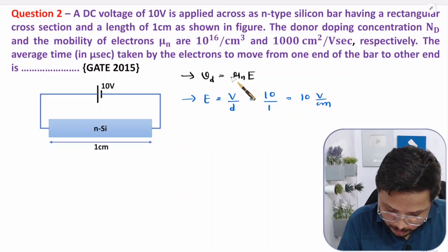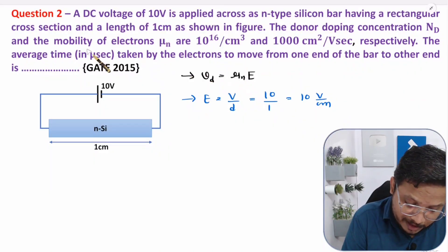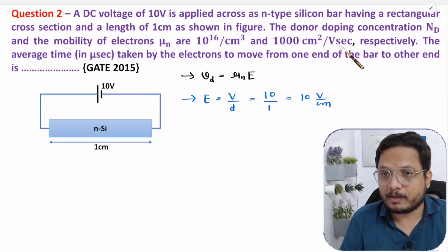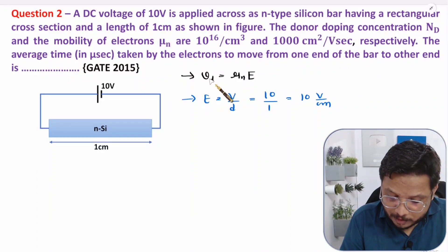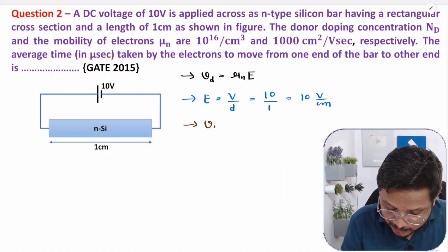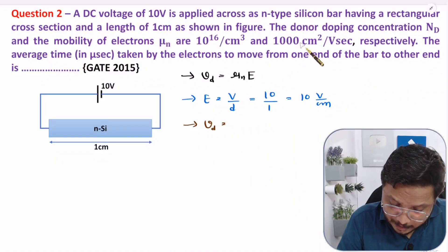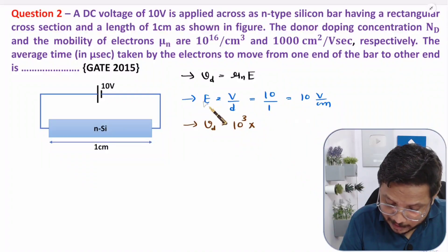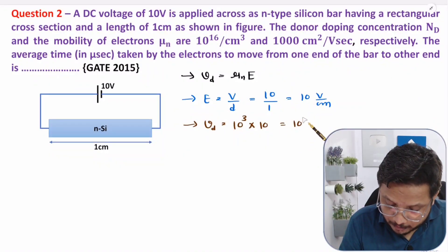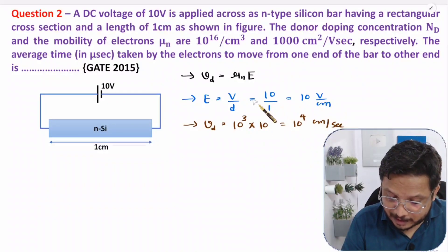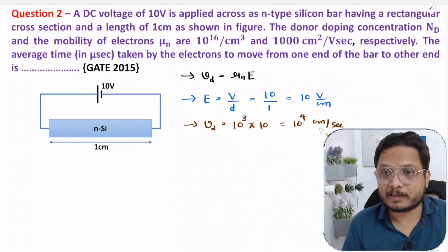Mobility of electrons μN is given as 1000 centimeter squared per volt-second. So drift velocity equals μN × E = 10³ × 10 = 10⁴ centimeter per second. We are consistently keeping units in terms of centimeters throughout this calculation.